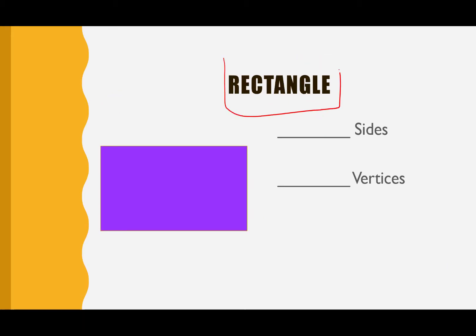Let's look at our next shape — this is called the rectangle. Let's go ahead and spell the word rectangle: R, E, C, T, A, N, G, L, E. Rectangle. Now you try — very nice. Rectangle.